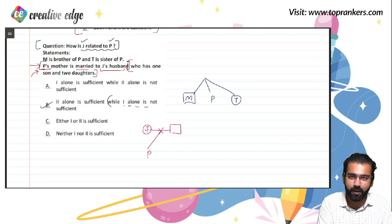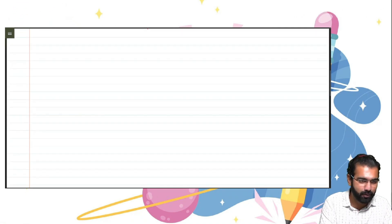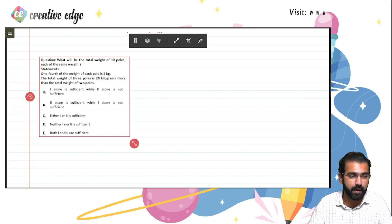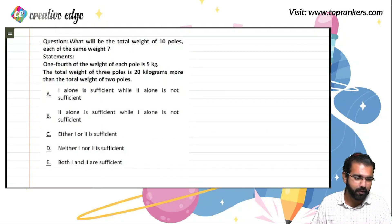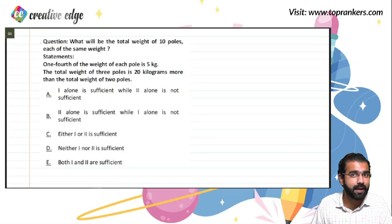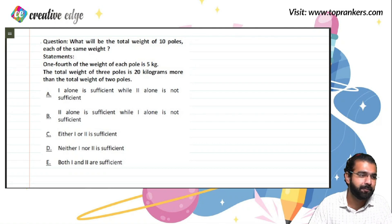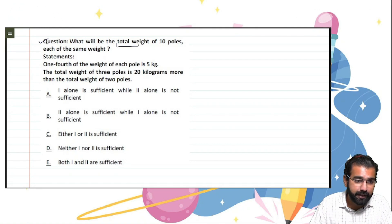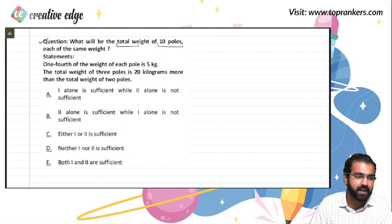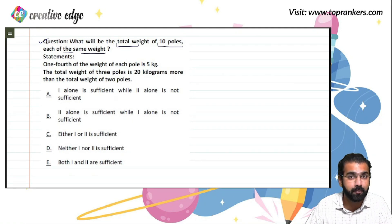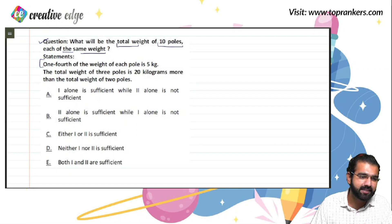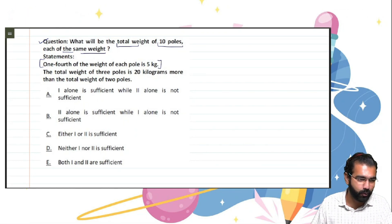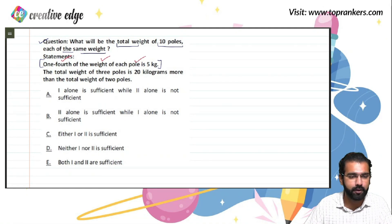Let's get more clarity through one more example to understand how to mark the correct options. The question is: what will be the total weight of 10 poles, each of the same weight? The algorithm is the same. Let's try statement 1 alone: one-fourth of the weight of each pole is 5 kg. If we let each pole weigh P kg, then P/4 = 5 kg, so each pole is 20 kg.